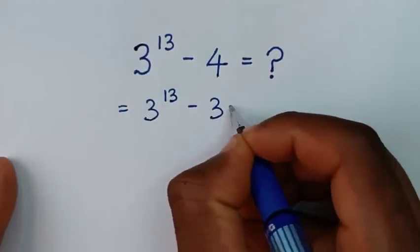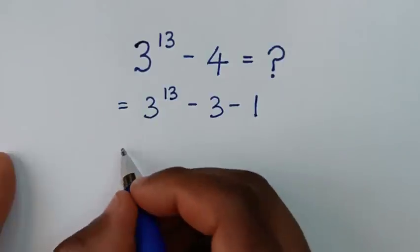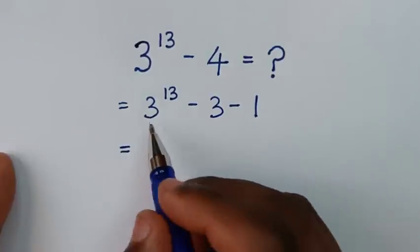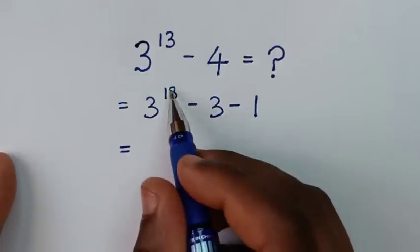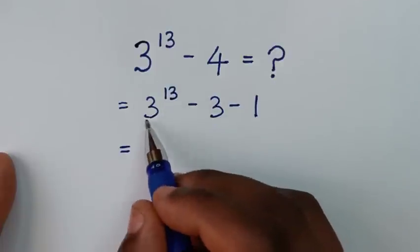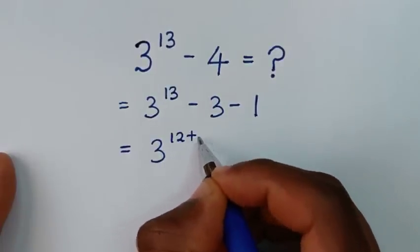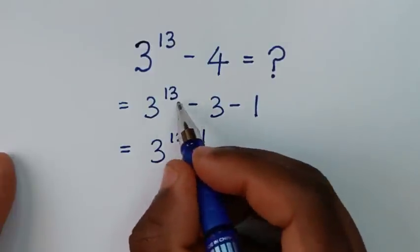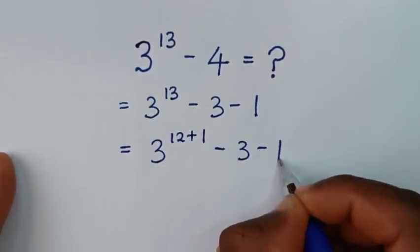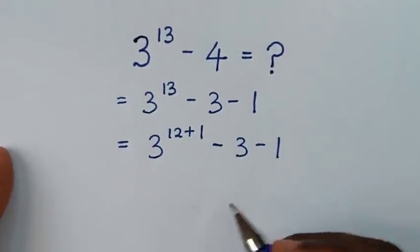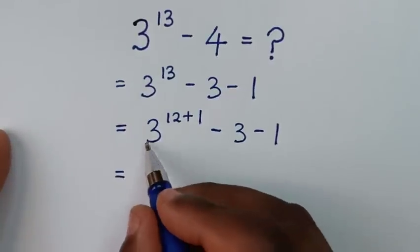...the same as minus 3 minus 1. Then it will be equal to: from here, 3 power of 13 — we take 3 out of the bracket — so 3 power of 13 is the same as 3 power of 12 plus 1, because 12 plus 1 is 13. Then minus 3 minus 1.